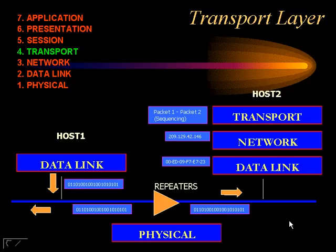The function of the transport layer is to fragment higher layer data into data segments when required, pass these segments to the underlying network layer, and ensure that these segments arrive at the remote end station where they are reassembled by the corresponding transport layer.